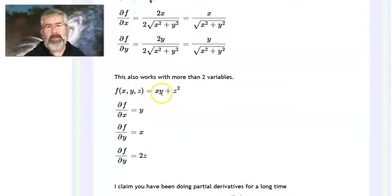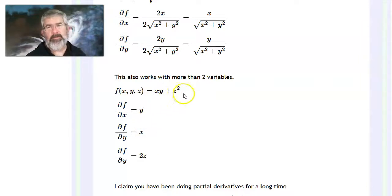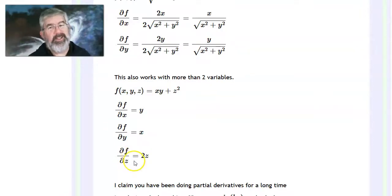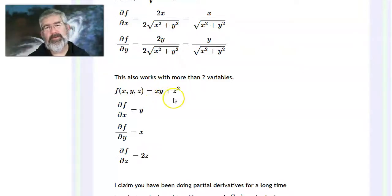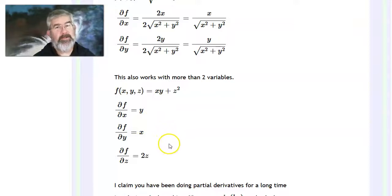So the partial with respect to x: this is just x times a constant plus another constant. The derivative of the second constant is zero; the derivative of x times the constant is just that constant, y. The partial with respect to y: x is now a constant, so the result is just x plus zero. The partial with respect to z: x·y is just a constant — its derivative is zero — plus the derivative of z², which is 2z. Treat all variables as constants except the one you're differentiating with respect to.